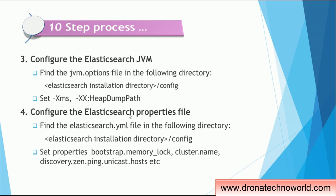The third step in setting up Elasticsearch is to configure the Elasticsearch JVM. We need to first locate the jvm.options file, which is normally present in the Elasticsearch installation directory under config. We have to set memory-related properties such as XMS or heap dump path. After that, we have to configure the Elasticsearch properties file for properties such as bootstrap.memory_lock, cluster.name, or discovery.zen.ping.unicast.hosts. There are other properties available as well — it is a large list, but the full list is present in the installation guide. This is one of the critical steps while setting up Elasticsearch.